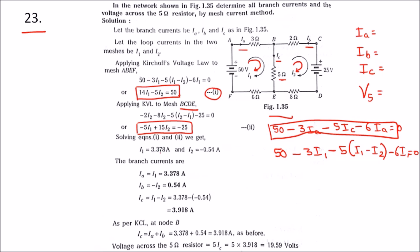Solving equations one and two, we get I1 and I2. Once we get I1 and I2, we can easily find Ia, Ib, and Ic. As we know, Ia equals I1, which is 3.378 amps.